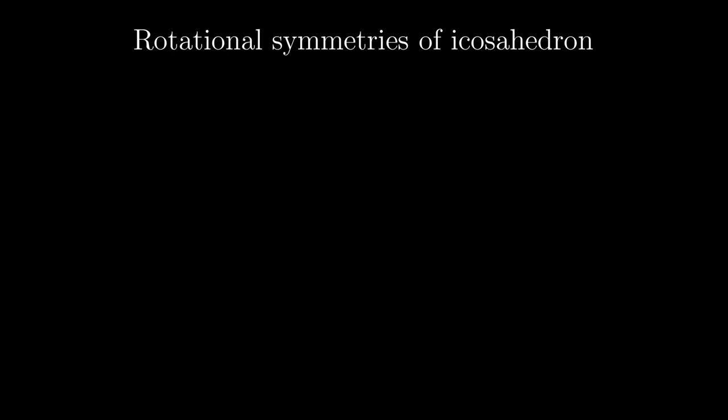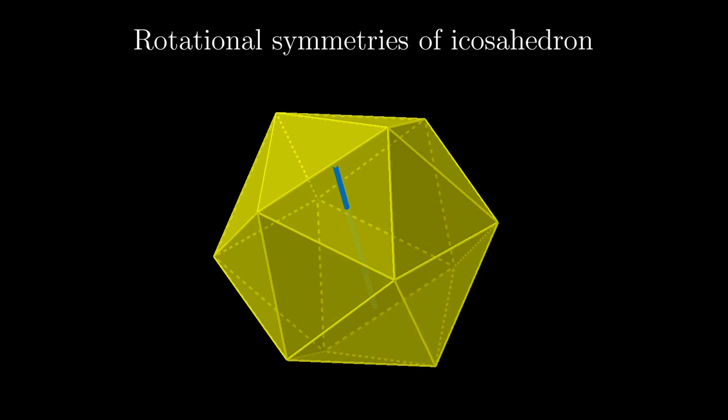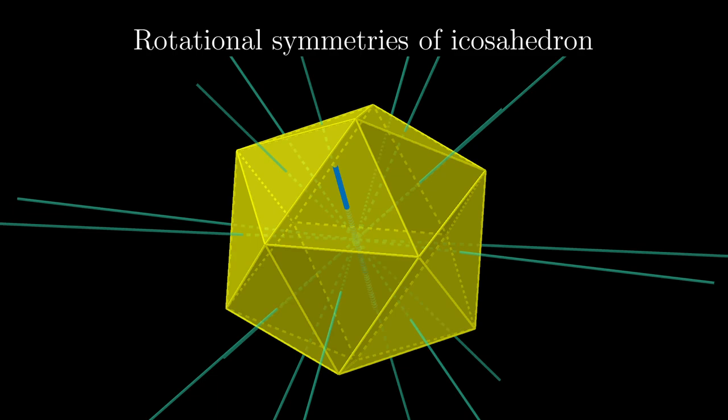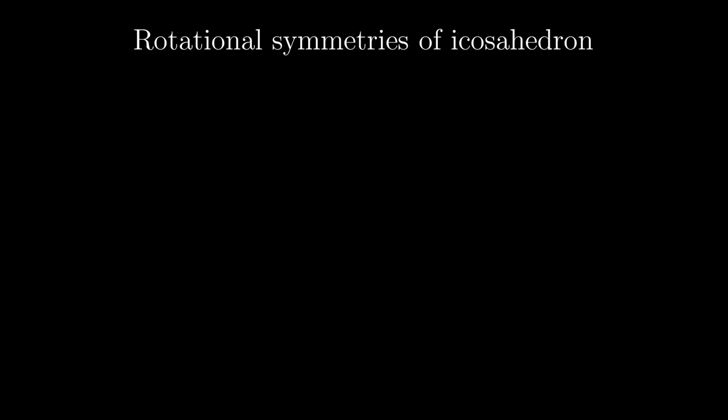One natural way to categorise these symmetries works like this. Take this 120 degree counterclockwise rotation as an example, where the rotation axis passes through a phase. Then 120 degree counterclockwise rotations along these different axes should be similar, and so we categorise them together. There are 10 axes here, so we can basically crush these 10 symmetries into a single category.